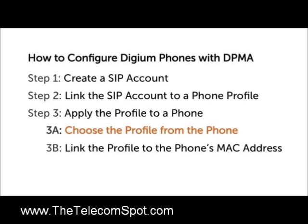When a Digium phone contacts the configuration server, it will retrieve a list of available user profiles. For this tutorial, I will disable authentication. This means that any profile in the list can be easily selected from any phone. These settings work well in environments where you'd like users to be able to configure their own phones.